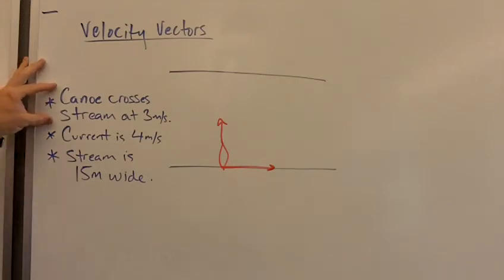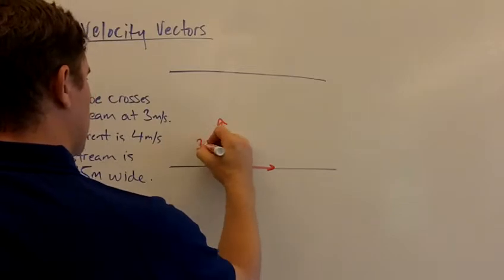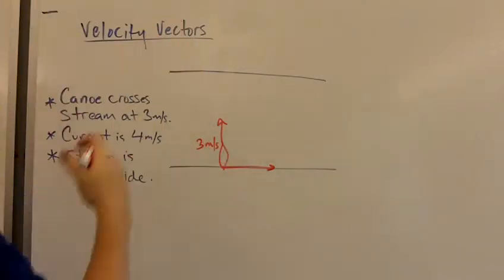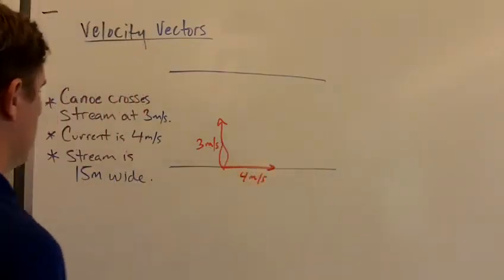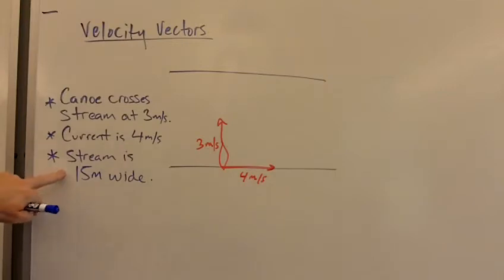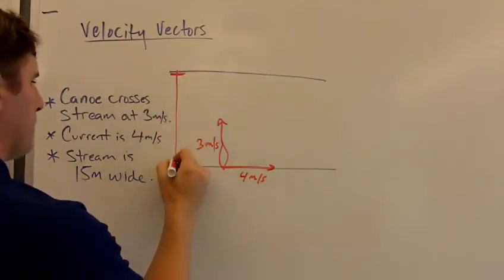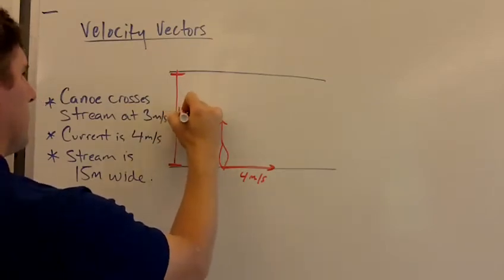Number one, it says the canoe crosses the stream at three meters per second. So that would be a direction in this case that way. The current is four meters per second downstream. So we'll label this four meters per second. And we also know that the stream is 15 meters wide. So this distance here is 15 meters.